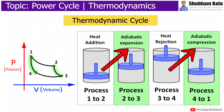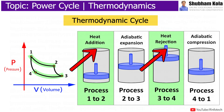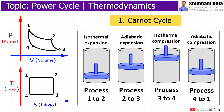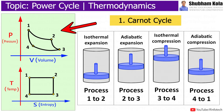Compression and expansion are opposite to each other, whereas heat addition and heat rejection are opposite to each other. The first cycle we discuss is the Carnot cycle, which is an ideal cycle proposed by French physicist Sadi Carnot in 1824.